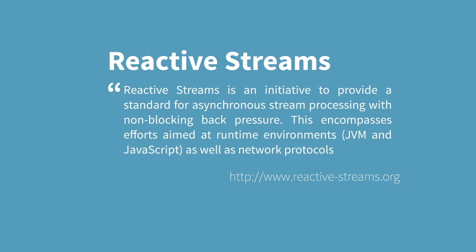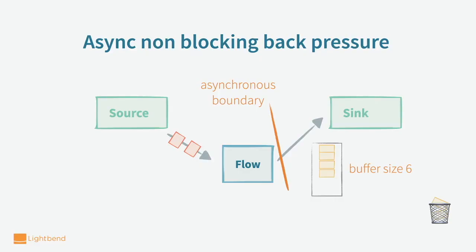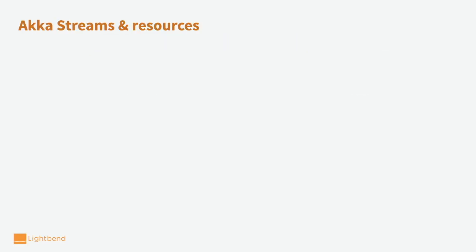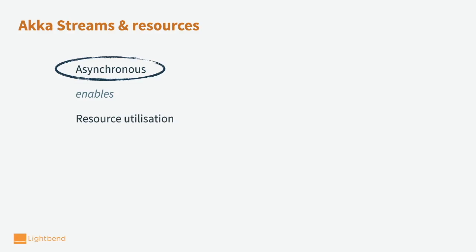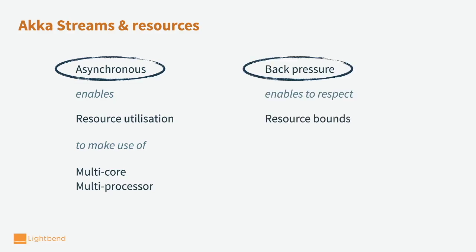Reactive streams has another very important concept: non-blocking backpressure. When we have asynchronous boundaries, there is non-blocking backpressure. This means the sink controls how much data it needs and requests data from upstream, which is then requested further upstream. To recap, ACCA streams can run asynchronously in different steps, enabling resource utilization so that we can make use of our hardware. Backpressure, on the other hand, enables us to respect resource bounds in our hardware, so that we don't exhaust threads, memory, network, and database connections.